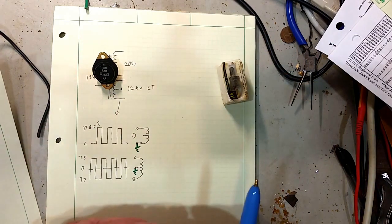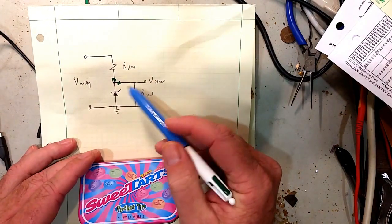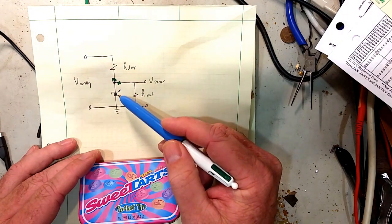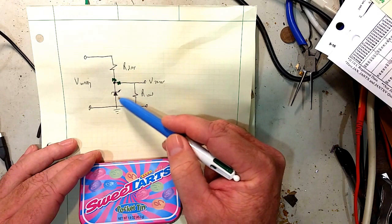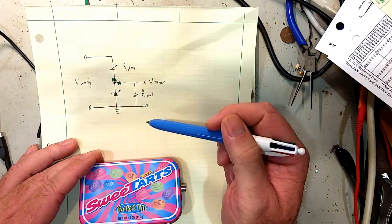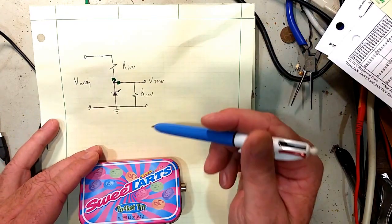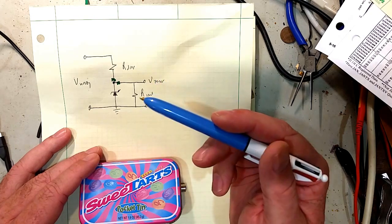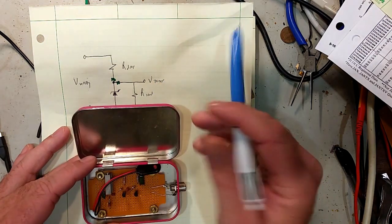The other thing about Zener's is that even though we have a fairly decent regulated output, Zener's are not perfect. So as the current varies, that's running through the Zener, you'll find that the voltage varies some, usually not huge. So in an application like we're talking about, that wouldn't matter too much in a precision power supply. It might become an issue. Also, they do generate some noise.